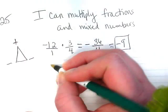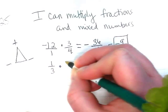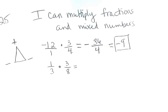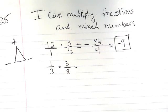Let's try this example. 1 third times 3 eighths. Again, with multiplying fractions, we don't need to worry about common denominators. We just multiply straight across.